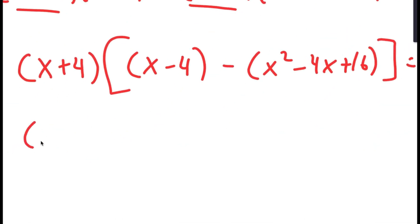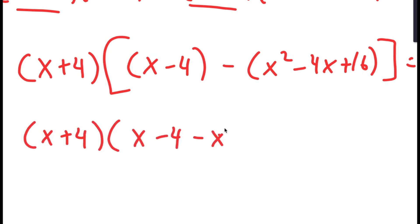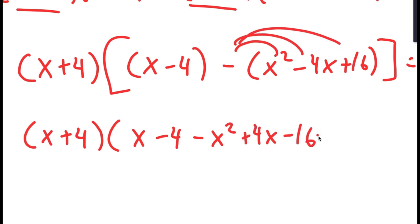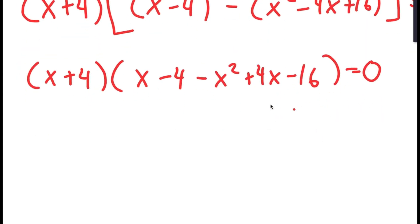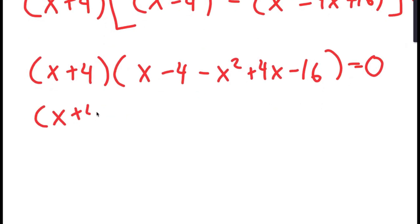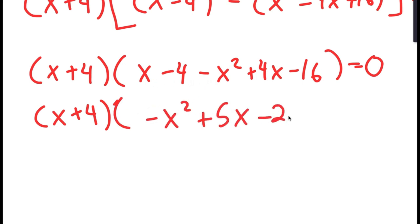Distributing the negative sign gives (x + 4)(x − 4 − x squared + 4x − 16) equals 0, which simplifies to (x + 4)(negative x squared + 5x minus 20) equals 0.